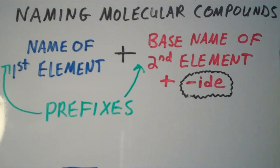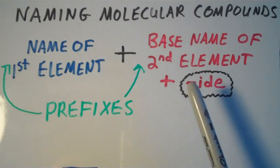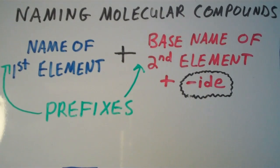You might be asking yourself, which one of the elements is the first element and which one is the second element? In ionic compounds it's easy because we always name the cation first. In other words, we name the metal first before we name the nonmetal. But with molecular compounds we have two nonmetals. So which nonmetal takes precedence and becomes the first element that we name?